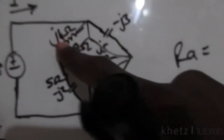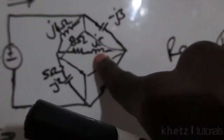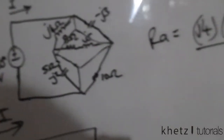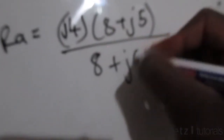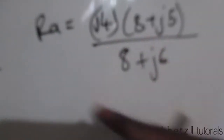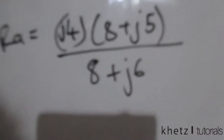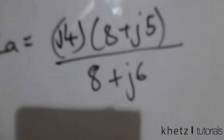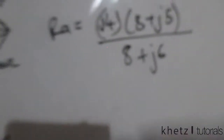After that, you divide by the sum of all the impedances in the delta. So J4 minus J3 is just J, then J added to J5 is J6, and added to 8 gives 8+J6. This bottom part — the sum of all the impedances in the delta — will always be the same because we have the same impedances in the same delta.